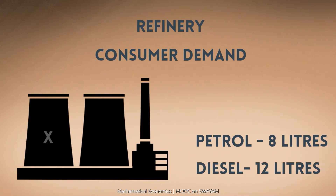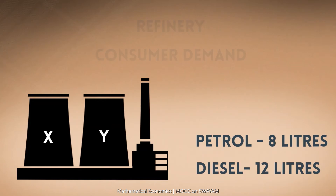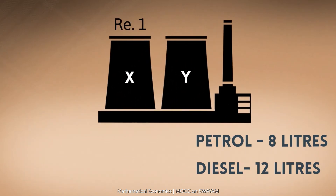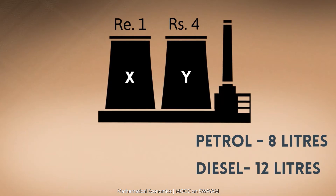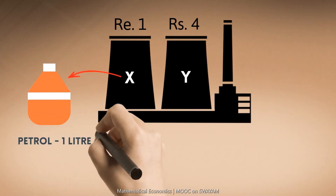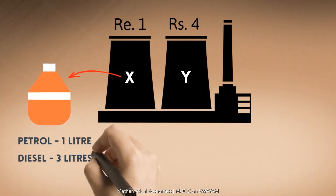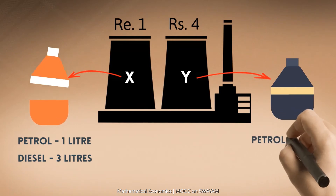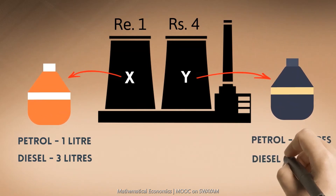There are two different types of crude oil, say X and Y, with a price of Rs. 1 per container and Rs. 4 per container respectively. Suppose one container of crude oil X produces 1 litre of petrol and 3 litres of diesel, and one container of crude oil Y produces 2 litres of petrol and 2 litres of diesel.